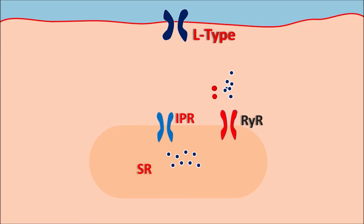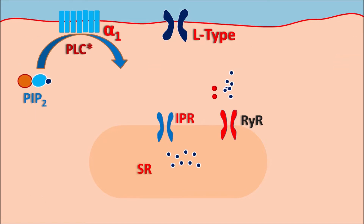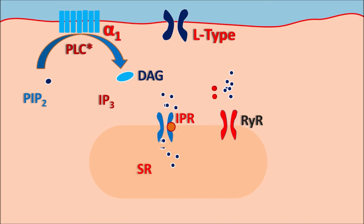Similarly, calcium can also be released from the internal stores by another mechanism. Vascular smooth muscle expresses alpha-1 receptors, which are G-protein coupled receptors. When these alpha-1 receptors are activated, they activate the phospholipase C system, which converts phosphatidylinositol bisphosphate into two important mediators: IP3 and diacylglycerol. This IP3 can then act on the IP3 receptors, further releasing calcium from the sarcoplasmic reticulum.